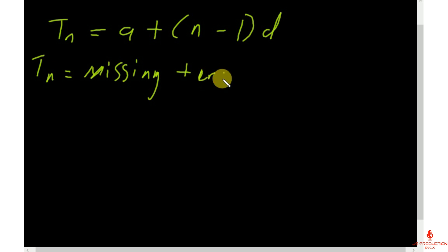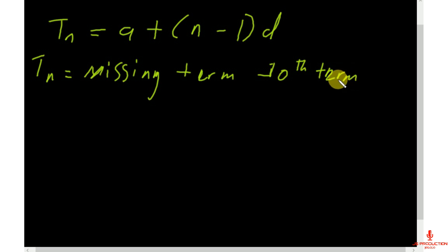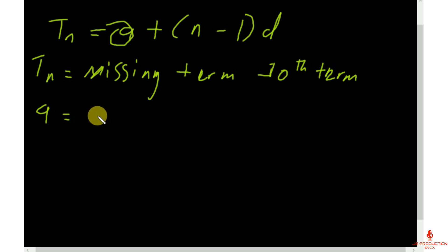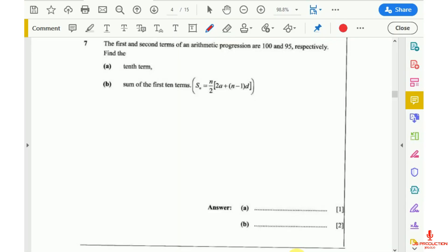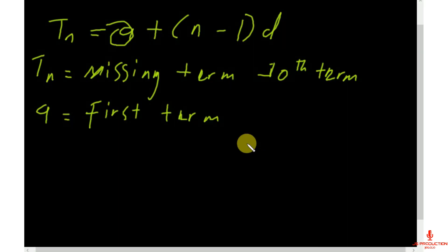In this case, the missing term we're trying to calculate is the 10th term as told in our question. Then A represents the first term — that's your first term in the sequence. From the question, we have been given two numbers: the first term is 100 and the second term is 95. So our first term A is 100.